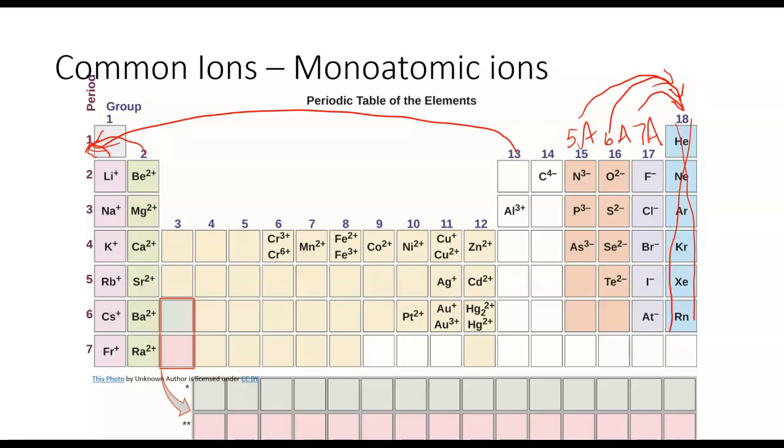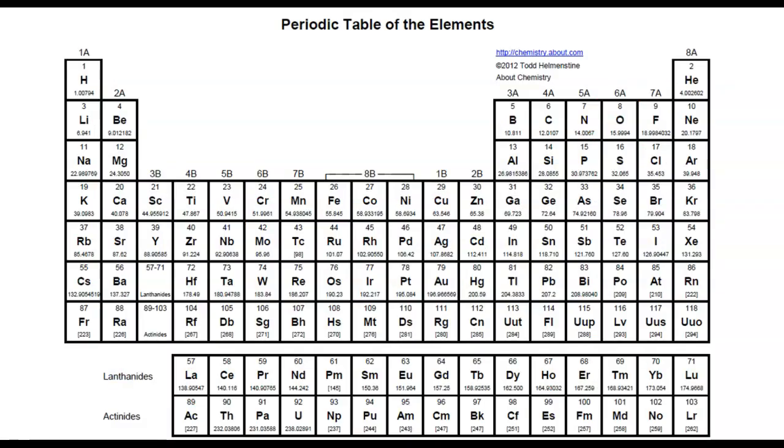We'll talk in a moment about what's happening here in these transition elements and how we tell what the charge will be on those monoatomic ions. I do suggest that when you look at the periodic table that you use for this class, that you go ahead and label it.